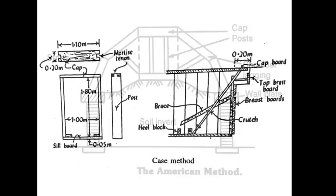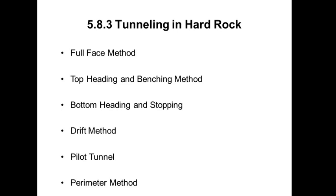Methods used for excavation of tunnels. Tunneling in hard rock: the full face method, heading and benching method, drift method, pilot tunnel, and perimeter method are the important methods. In the full face method, the full diameter of the tunnel is excavated. In heading and benching, the top surface is excavated first, then the bottom surface — this top and bottom is called heading and benching. In the drift method, a small drift at the top, bottom, or side is excavated. The pilot tunnel is a side tunnel used for access into the main tunnel.